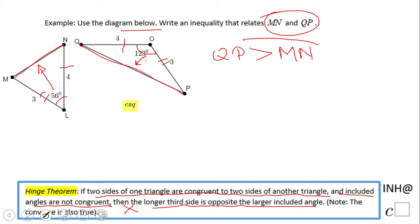This is what the hinge theorem says: QP is greater than MN. I put here a note that the converse is also true. If you enjoyed this video, don't forget to click the like button and come back on C-square for more help. Thank you.